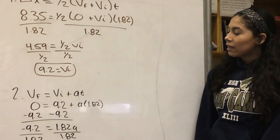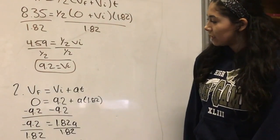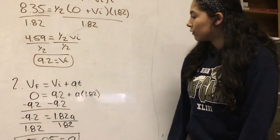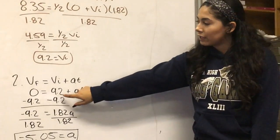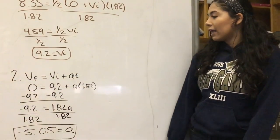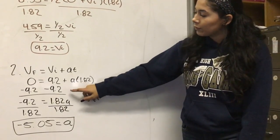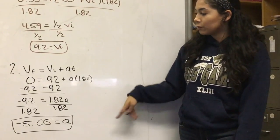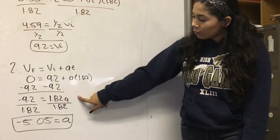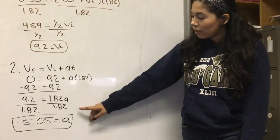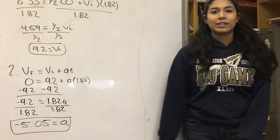After that, for acceleration, I plugged in 0 for final velocity and for initial, I put 9.2 which is what we got and time 1.82. Then I subtracted 9.2, negative 9.2 to both sides and then divided 1.82 and got negative 5.05 for acceleration.